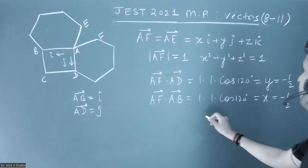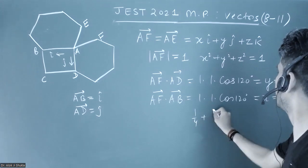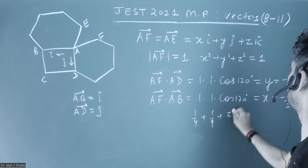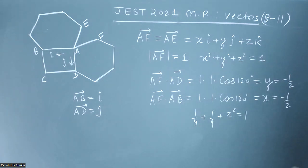That means z equals 1/√2. So if AF vector is like this, with the perpendicular component being 1/√2.